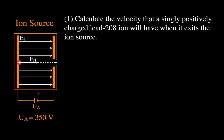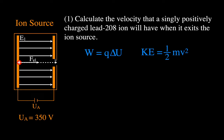We can calculate the exit velocity because when the positively charged particle is against the positive plate, it has potential energy. That potential energy is W = Q times the acceleration voltage. As it moves through the electric field, that potential energy is converted into kinetic energy, which is one-half mv squared. Setting potential energy equal to kinetic energy allows us to solve for the velocity.